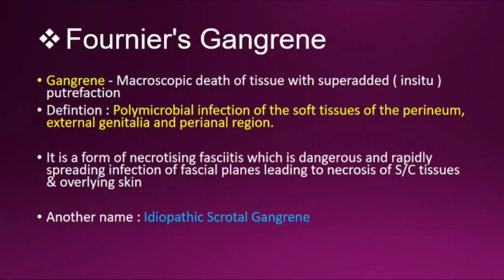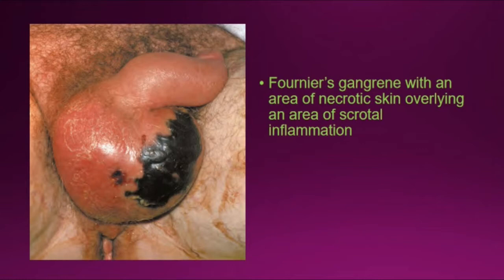It is a form of necrotizing fasciitis, which is a dangerous and rapidly spreading infection of fascial planes leading to necrosis of subcutaneous tissues and overlying skin. Another name for Fournier's gangrene is idiopathic scrotal gangrene, characterized by rapid onset leading to exposure of scrotal contents. Here is a picture of Fournier's gangrene showing an area of necrotic skin overlying an area of scrotal inflammation.